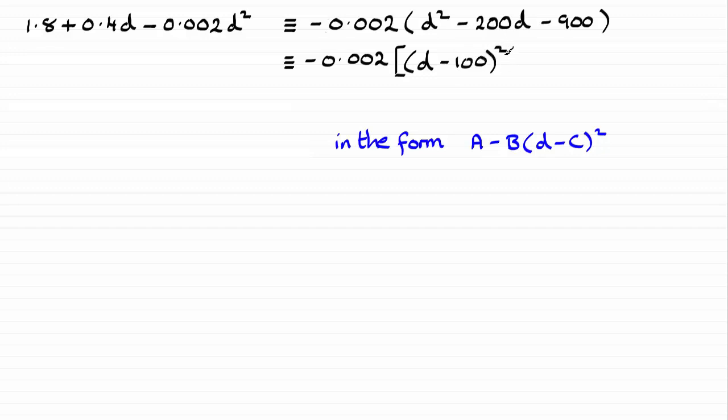When you square this out, you're going to get d-squared minus 200d plus the result of minus 100 squared. That's going to be plus 10,000. So we've got to subtract that 10,000.